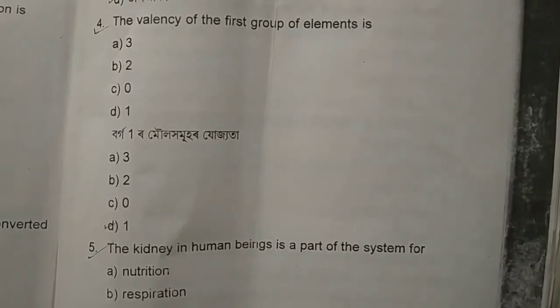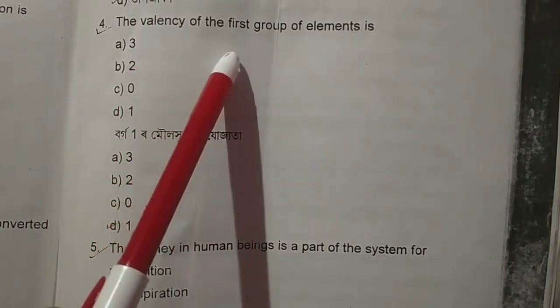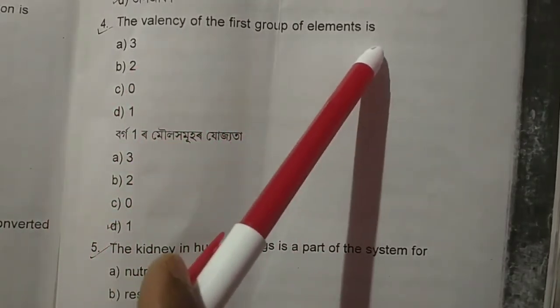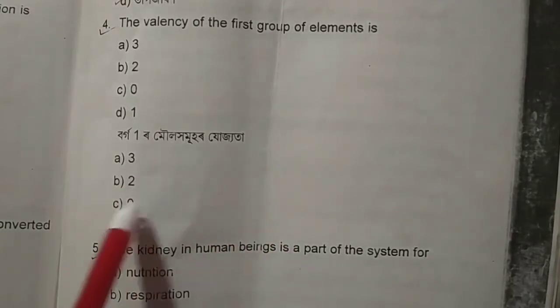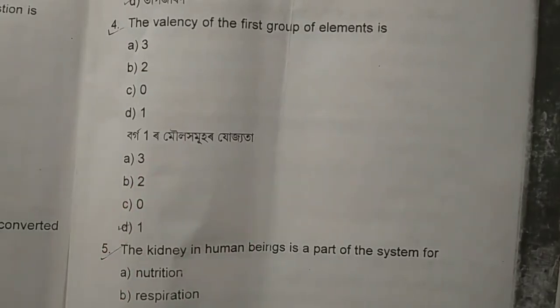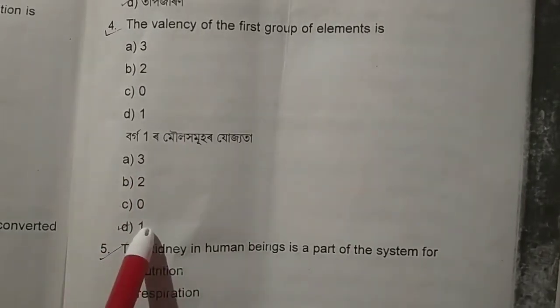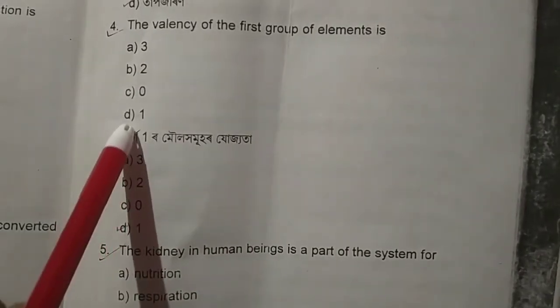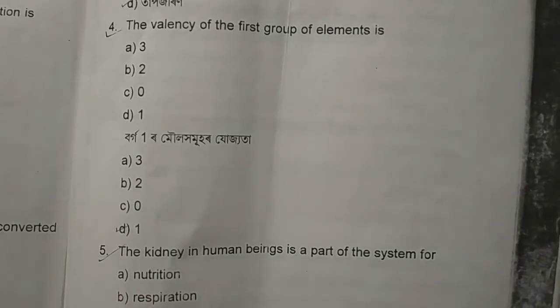Number four: the balance of the first group of elements is a) 3, b) 2, c) 0, d) 1. The correct answer will be d) 1.